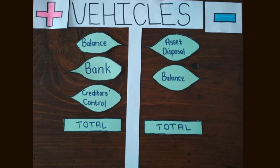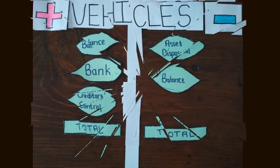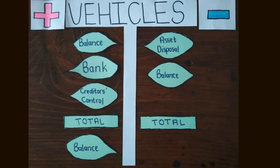Let's balance the account to calculate the closing balance. What is the closing balance? On the last day of the financial year, you add together the original cost price of all the vehicles inside the business. This is the closing balance of the vehicles account, and it will also be the opening balance of the new financial year.